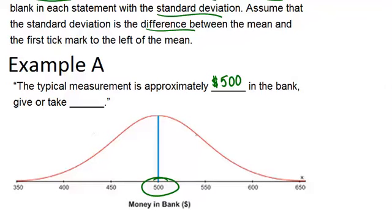So we can look at the first tick mark because it told us that that's where the standard deviations are. And we can see that we go from $450 to $500, so that's a difference of $50. And it's the same on either side because we're going from $500 up to $550. So that means the standard deviation is $50. We don't say the standard deviation is $550. We look at the difference between the mean and the next value up there. So the typical measurement is approximately $500 in the bank, give or take $50.